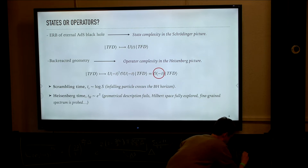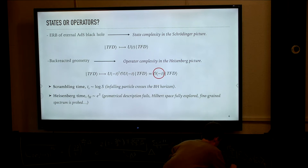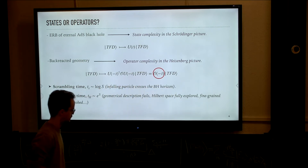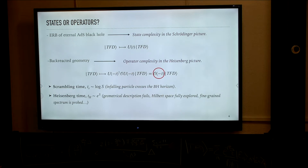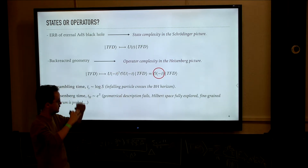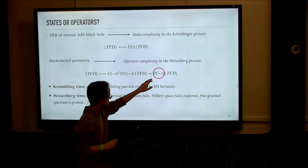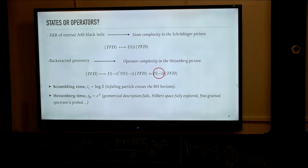These are energy eigenstates in H_left cross H_right. This is the state that's dual to the two-sided black hole, and its evolution in time would give us the evolution of the Einstein-Rosen bridge, and its behavior when we insert an operator in the past would give us the butterfly effect.